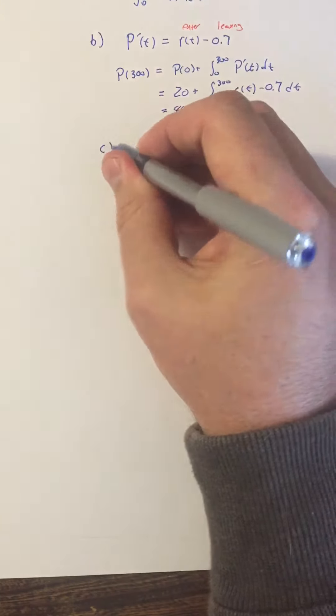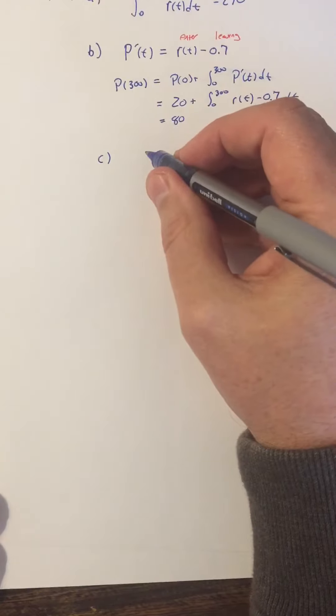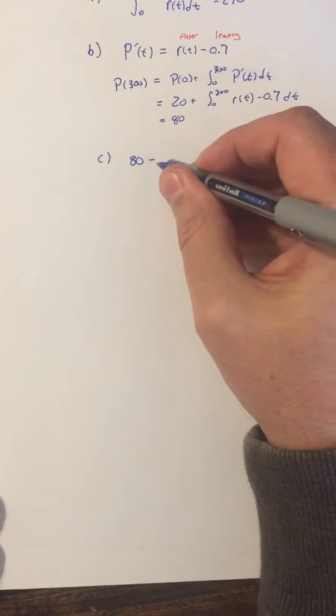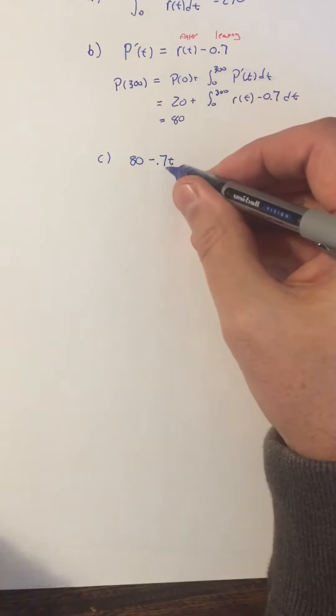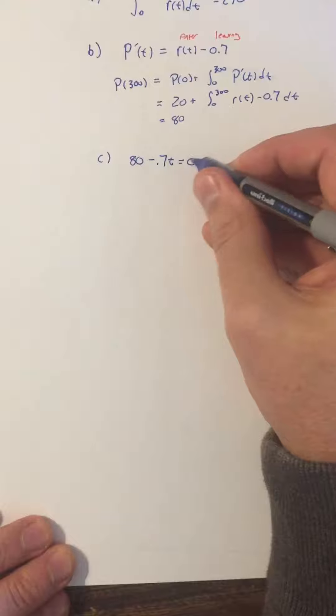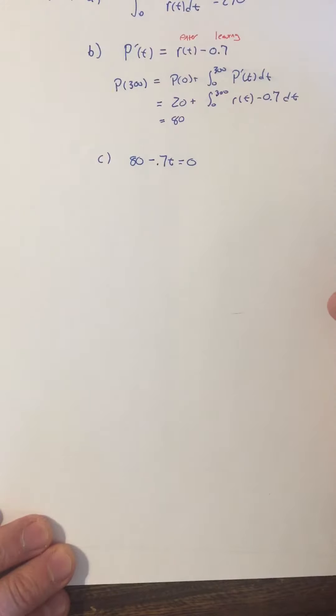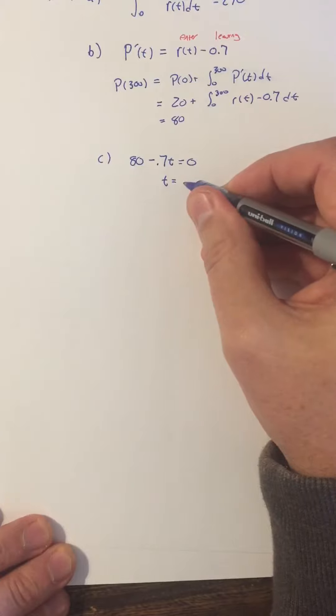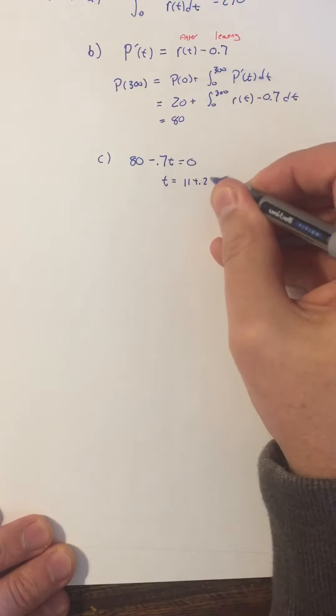For part c, we know we've got this 80 people. And if I have them all leave at 0.7 people per second, how much time will it take before that gets down to zero? So you can solve that. It's pretty easy to solve and get t equals 114.286.